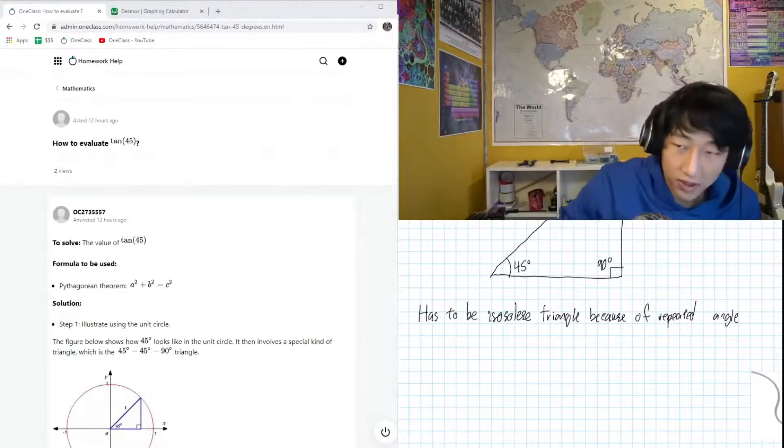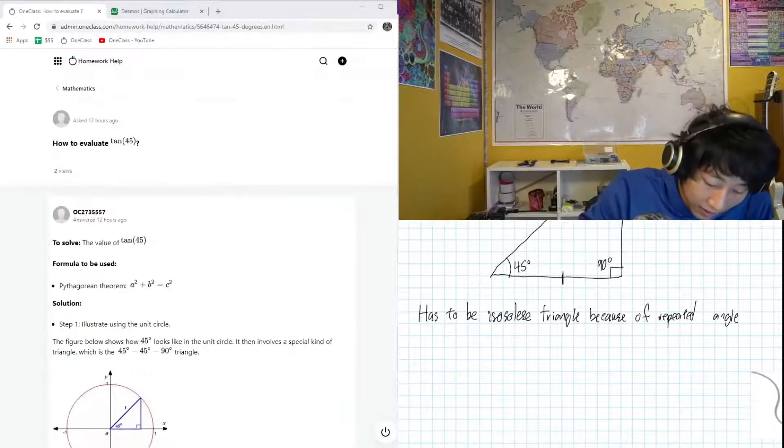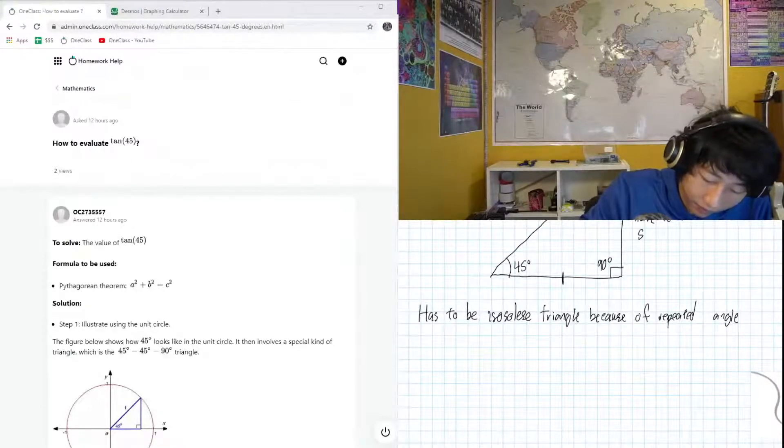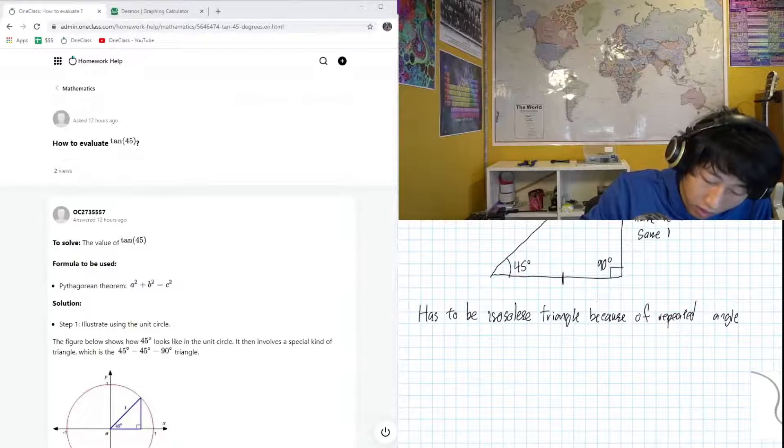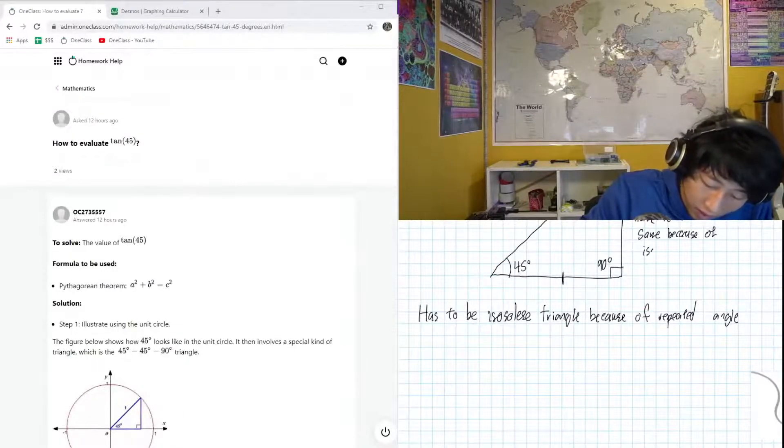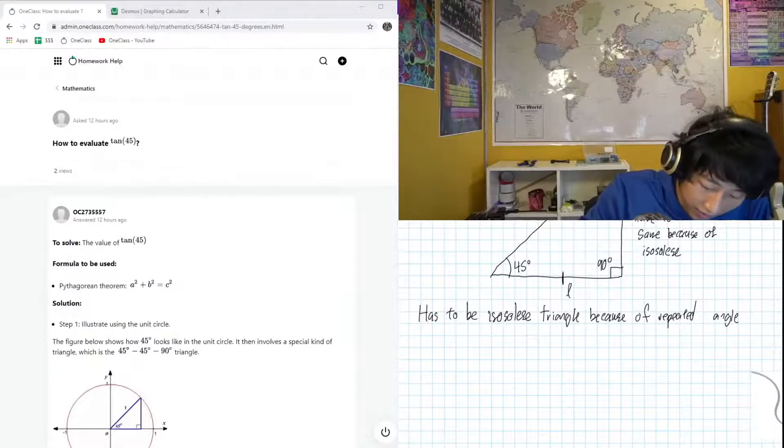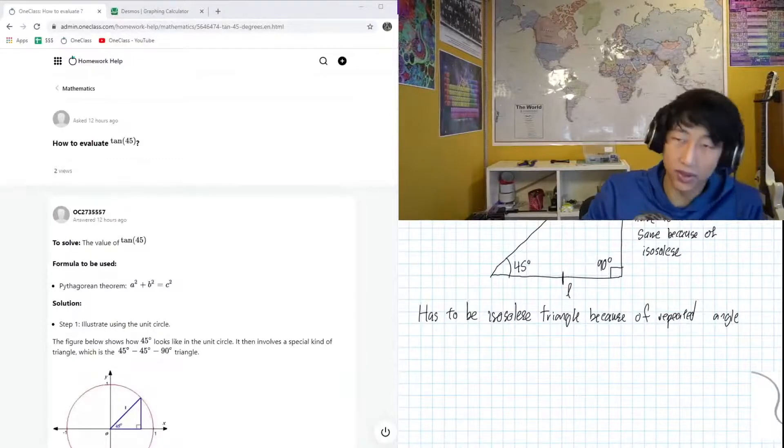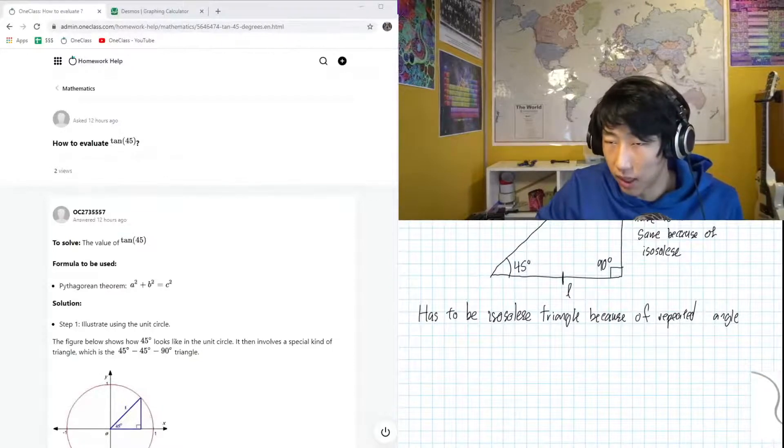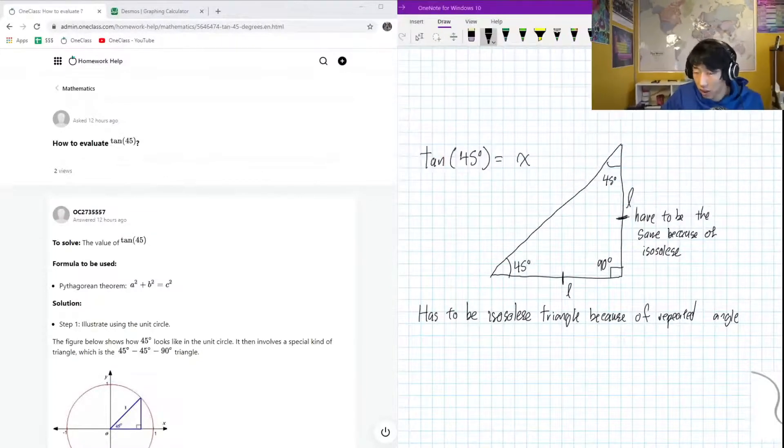So given that these are isosceles, these angles mean that these side lengths have to be the same as well. They have to be the same because of isosceles. Okay, let's call these L, the distance L, because we're already using x somewhere else, so we're going to use a different letter L. Oh, let me shrink down my camera ASAP fast.